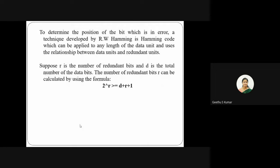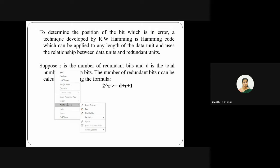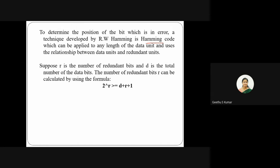The Hamming code mechanism was introduced by R.W. Hamming, hence the name. Using this mechanism, we are able to determine the position of a bit in error. If the sender sends data and the receiver detects an error, Hamming code tells us at which bit position the error has occurred. However, this is only applicable when a single bit error has occurred; it cannot handle multiple corrupted bits.